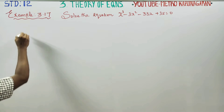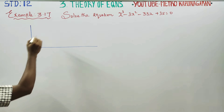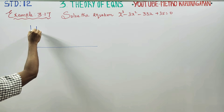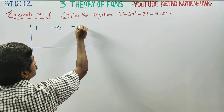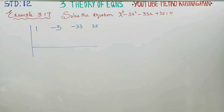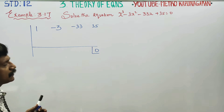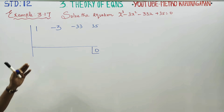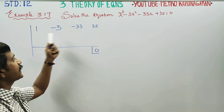This cubic equation is solved using synthetic division. The coefficients are: x³ coefficient, x² coefficient, x coefficient, and the constant. In synthetic division, you have to remember that a remainder of zero means one factor and one solution.